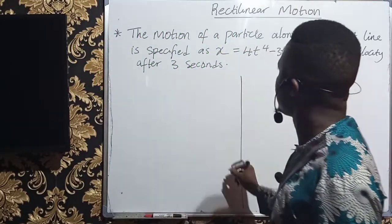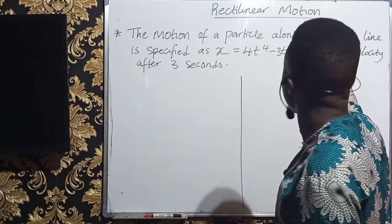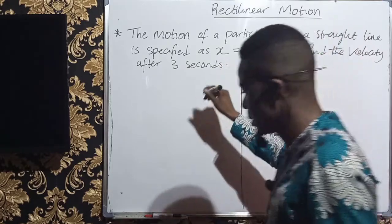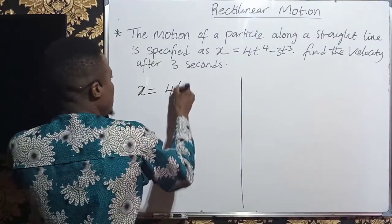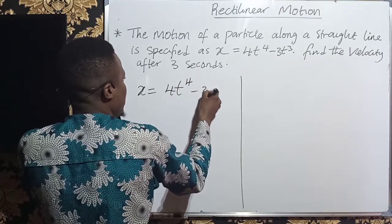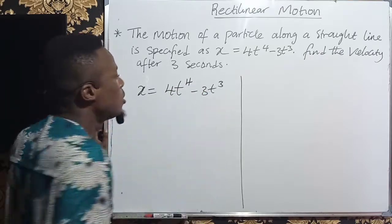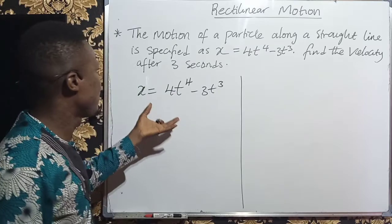The question we have here is telling us that the motion of a particle along a straight line is specified as x equals 4t to the power of 4 minus 3t to the power of 3. We are asked to find the velocity after 3 seconds.